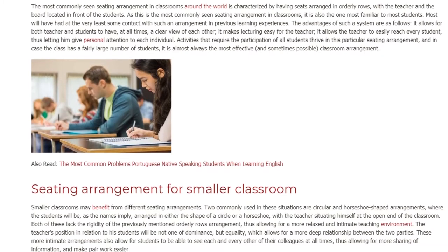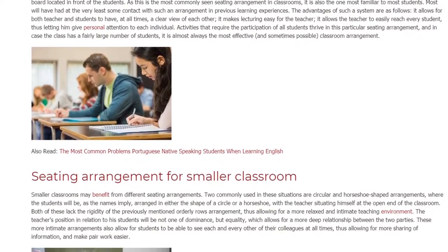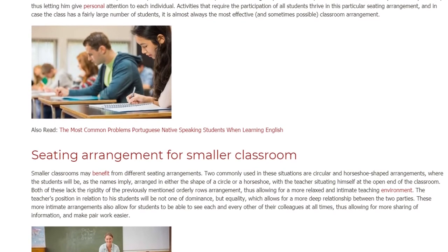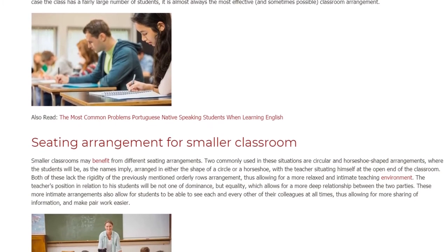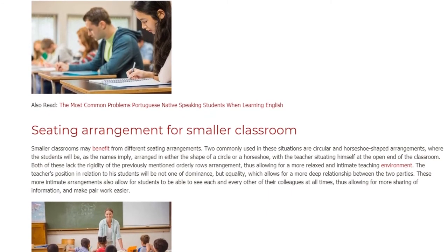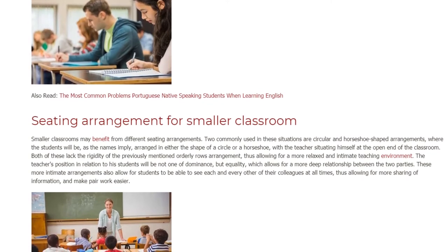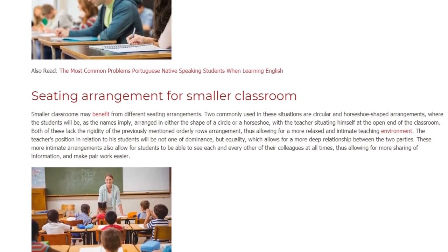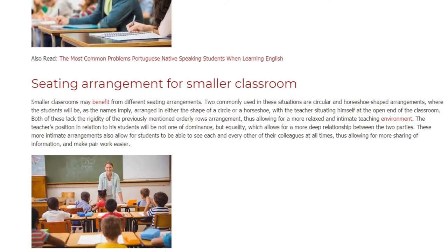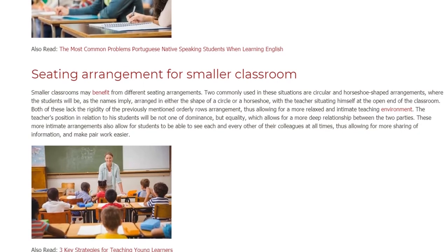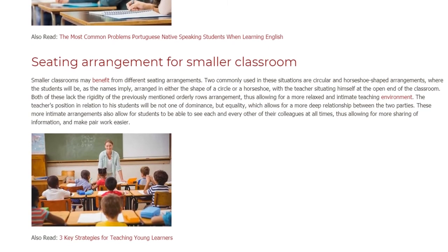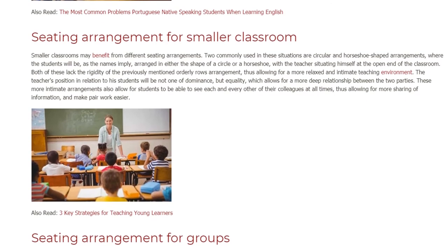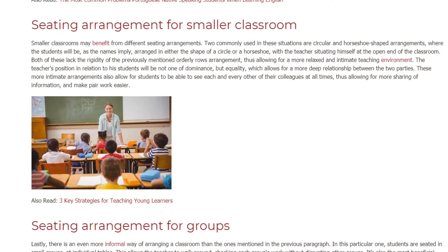Seating Arrangement for Smaller Classrooms. Smaller classrooms may benefit from different seating arrangements. Two commonly used in these situations are circular and horseshoe-shaped arrangements, where the students will be, as the names imply, arranged in either the shape of a circle or a horseshoe, with the teacher situating himself at the open end of the classroom. Both of these lack the rigidity of the orderly rows arrangement, thus allowing for a more relaxed and intimate teaching environment. The teacher's position in relation to his students will be not one of dominance, but equality, which allows for a more deep relationship between the two parties. These more intimate arrangements also allow for students to see each and every one of their colleagues at all times, thus allowing for more sharing of information and making pair work easier.